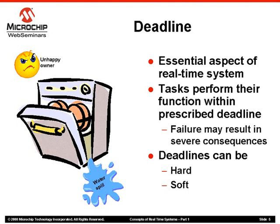In our dishwasher system, say the water manager task is currently filling the water in the chamber. When the dishwasher is full with water, the water manager task should immediately shut the water intake — otherwise the water may spill out of the dishwasher. Every task in a real-time system is characterized by its deadline. A task is expected to perform its function by the time allocated to it, meaning before the deadline. The deadline may be absolute or relaxed. If a task must perform its function within one second, then it is an absolute deadline; if the task should perform its function in about one second or so, then the deadline is relaxed.